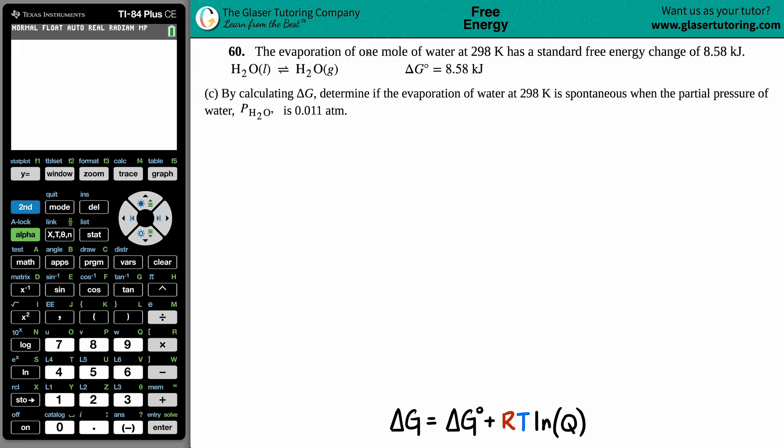Number 60. The evaporation of one mole of water at 298 Kelvin has a standard free energy change of 8.58 kilojoules. In this equation, we have H2O liquid which comes to equilibrium with H2O gas, so it's evaporating. The ΔG° is 8.58 kilojoules.